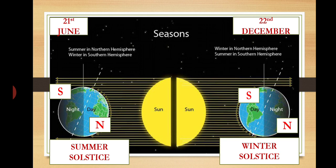On 22nd December, perpendicular rays of the Sun fall on the Tropic of Capricorn, which is in the southern hemisphere. The southern hemisphere will therefore experience summer solstice from 22nd December to 21st March, while at the same time the northern hemisphere will experience winter solstice from 22nd December to 21st March.